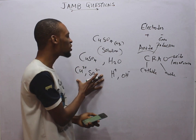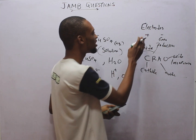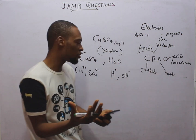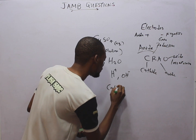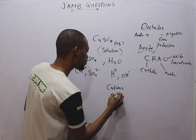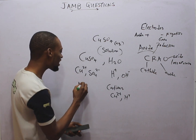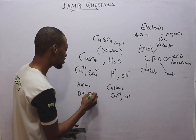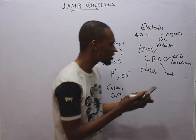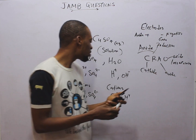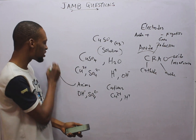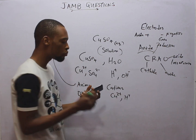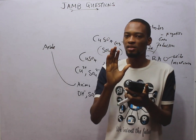Next is migration of the ions. In electrolytic cells, the anode is positive and the cathode is negative. We have two types of ions. Positive ions are called cations — in this case Cu²⁺ and H⁺. The anions, which are negative ions, are OH⁻ and SO₄²⁻. The question asks about the reaction at the anode. The anode is positive, so the negative ions — the anions — migrate to the anode. So these two anions are present at the anode. Any option with a positive ion at the anode is wrong — option A is completely wrong.